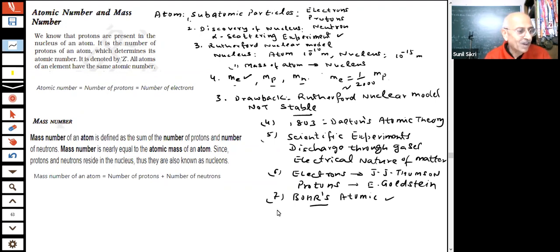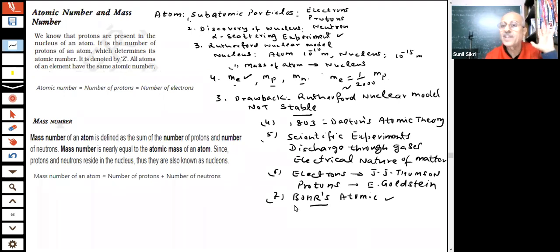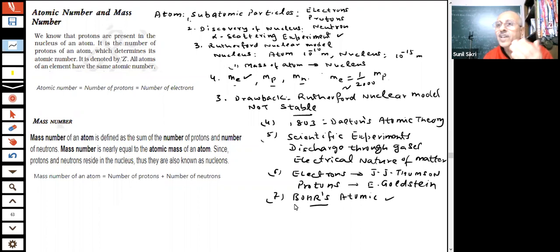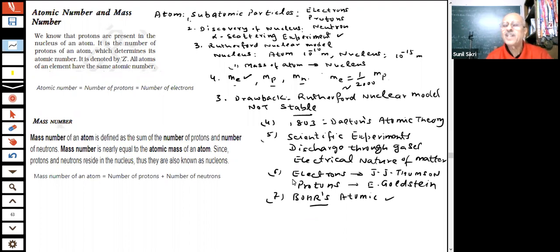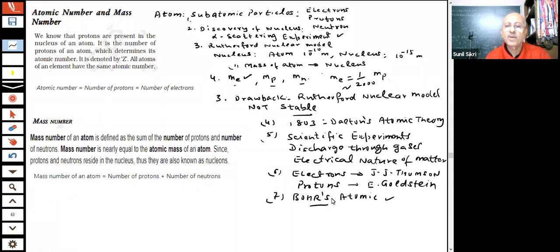Bohr said that only certain permitted orbits exist. So long as electrons move in those orbits, they do not lose or gain energy — they do not radiate energy. If they radiated energy, the atom would not be stable. He had experimental evidence from the atomic spectra of hydrogen, which was studied in great detail by many scientists, forming the basis for his postulates.